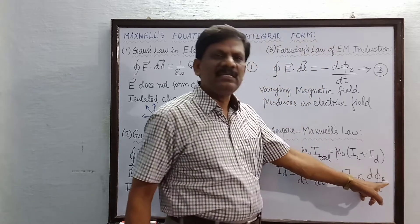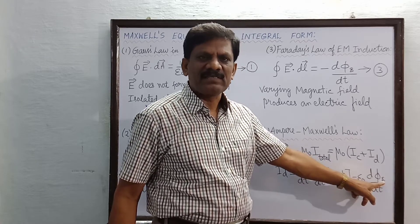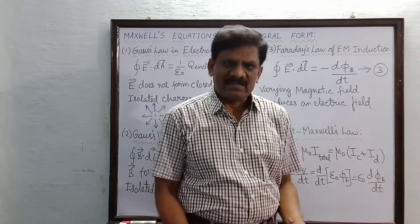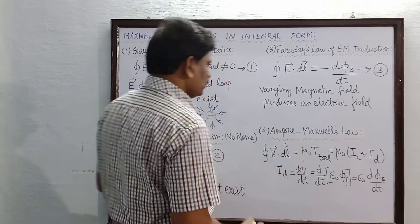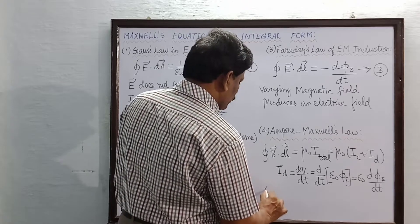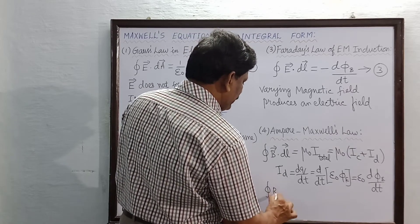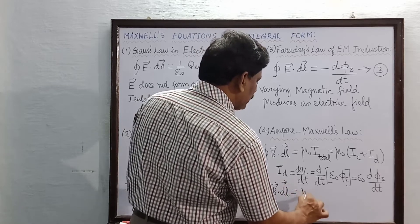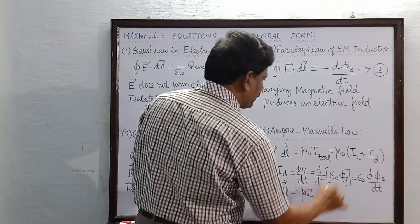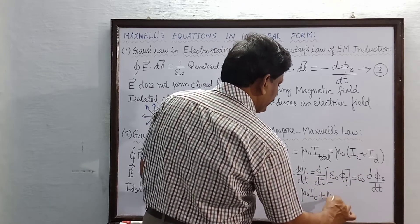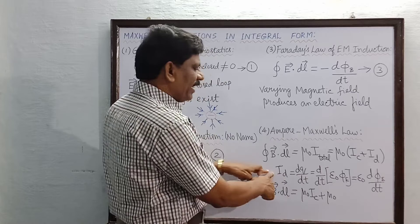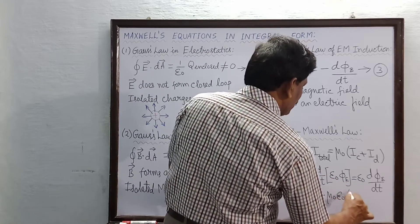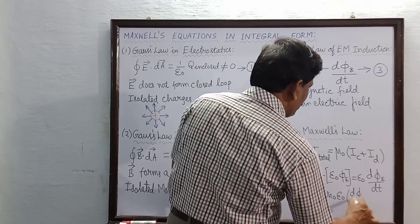Phi suffix E is the electric flux, so D phi by DT is the rate of change of electric flux. The closed integral B dot DL now equals mu naught times I_C (conduction current) plus mu naught times I_D. Instead of I_D, we substitute epsilon naught times D phi E by DT. This gives us the Ampere-Maxwell equation.